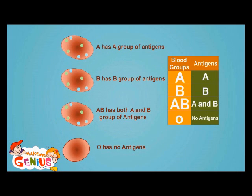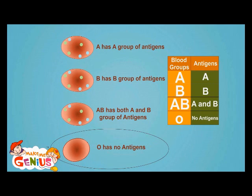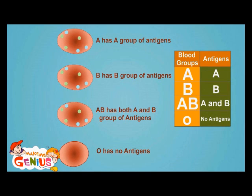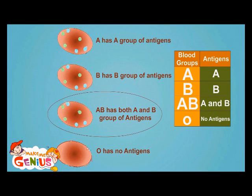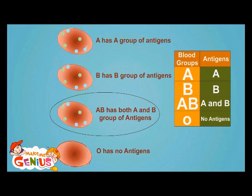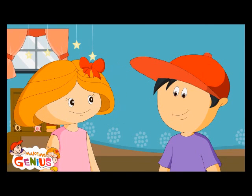So, few people have A-type, few people have B-type, and a few don't have any antigen — so it is called O-type blood. And there are others who have both A and B antigens in their blood, called A-B type. So there are four types of blood: A, B, A-B, and O. You're right.